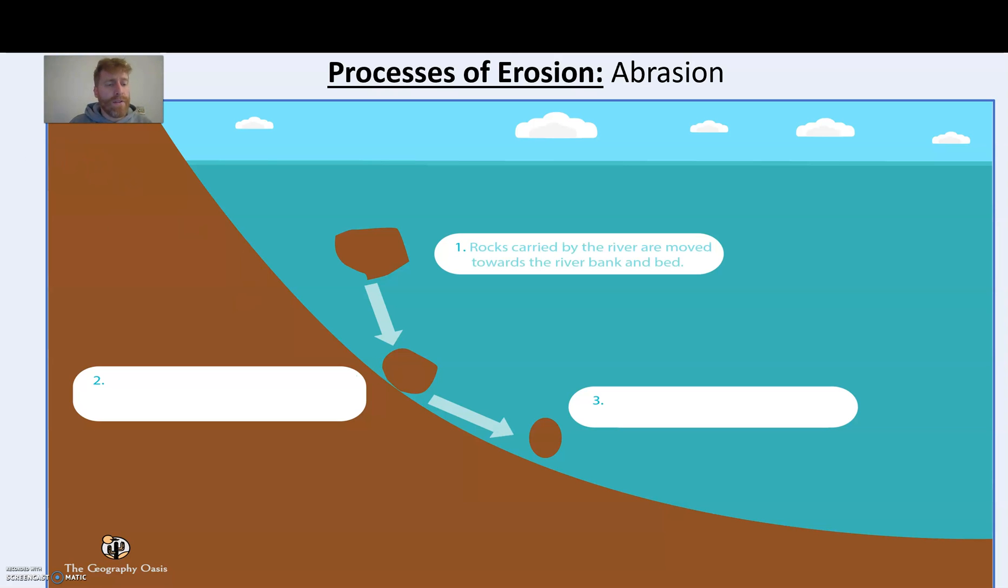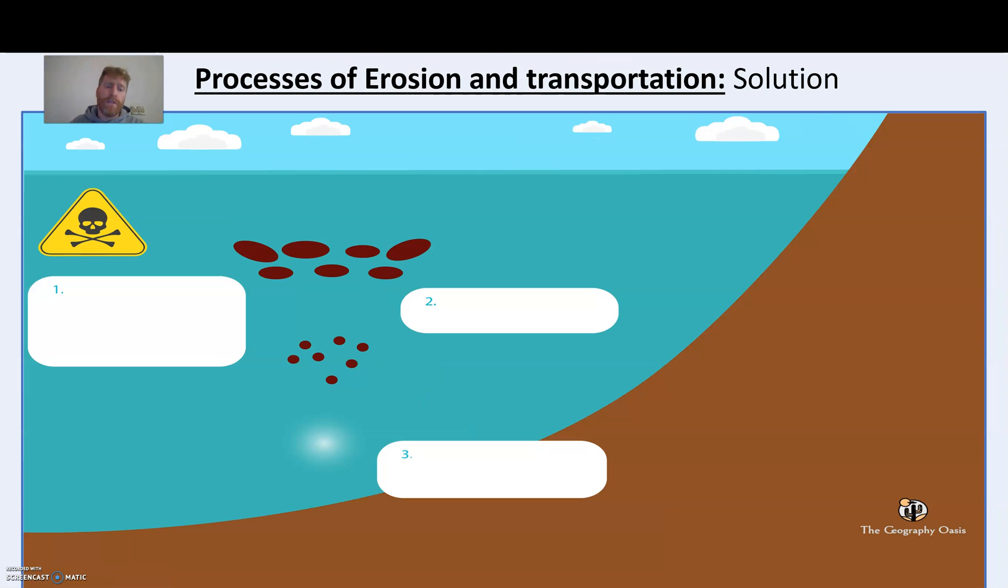Final process of erosion is solution. Sometimes this is called corrosion, so corrosion or solution, it's the same thing. And just as in coasts, it will be where slightly acidic water in the river will react with certain minerals in certain rocks and it will cause them to dissolve. A great one is limestone - calcium carbonate can be dissolved by river water.